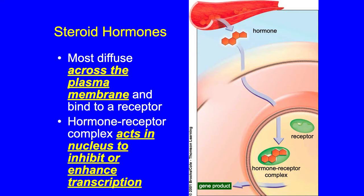Steroid hormones can diffuse across the plasma membrane and bind to a receptor. Because the plasma membrane is a lipid bilayer, steroid hormones can pass through relatively easily. The hormone-receptor complex then acts in the nucleus to inhibit or enhance transcription — transcription can be stopped or sped up based on whether it's negative or positive feedback.